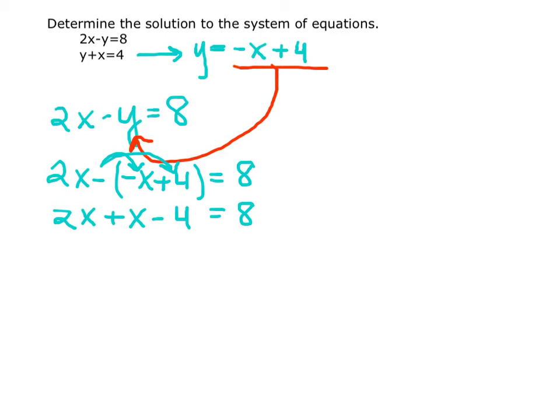In solving for x, we have to combine like terms. 2x plus another x is 3x. Still have the minus 4 equals 8.